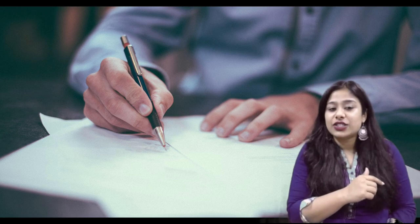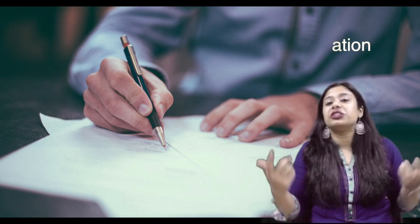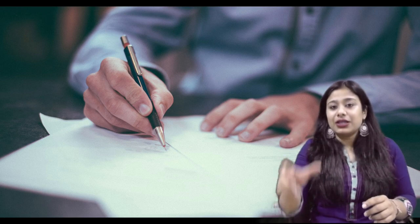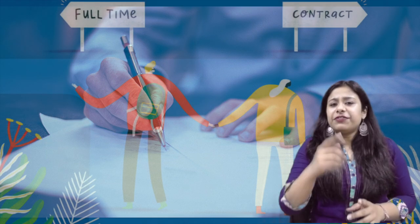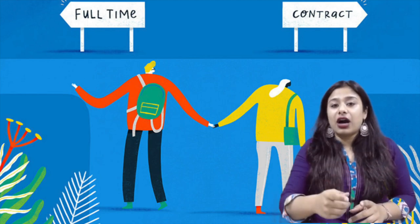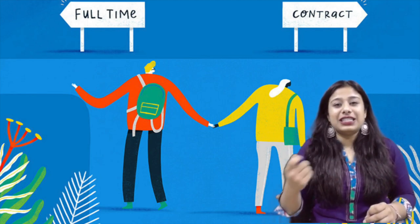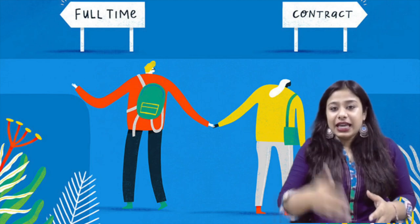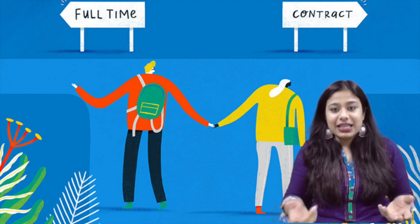The third essential of a valid contract is lawful consideration. Lawful means something which is not forbidden or prohibited by law. Consideration means quid pro quo — something in return. For example, if A tells B he will sell his car and wants 1 kg of weed in return, since weed is illegal in India, that consideration is illegal and hence invalid.